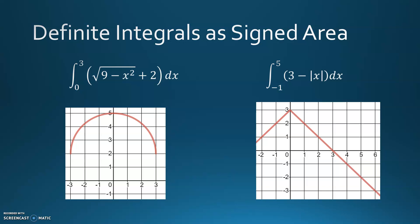There are some integrands where this is the only way we're going to be able to evaluate the definite integral. This particular integrand, I hope you recognize as a semicircle with a radius of 3, shifted up 2 units. So the center would be at (0, 2) because it's been shifted up 2 units.